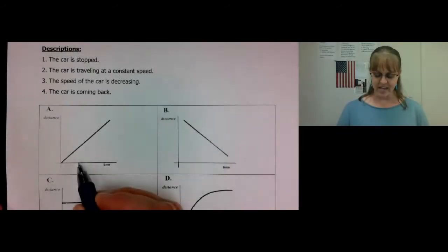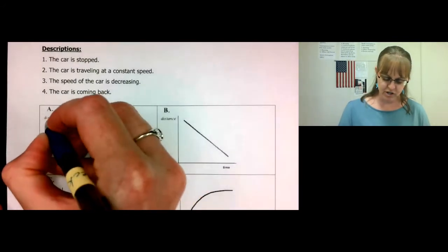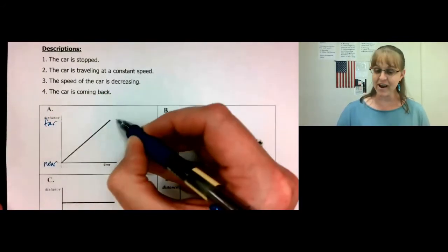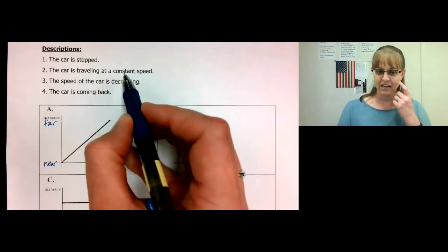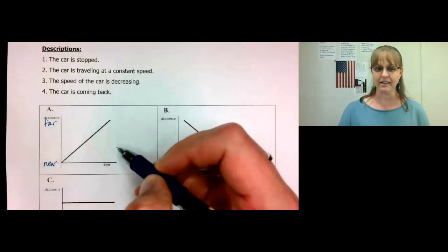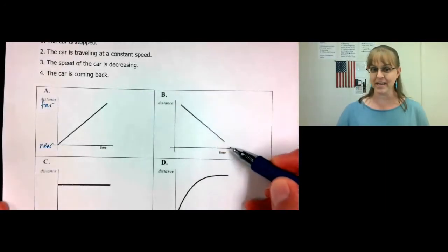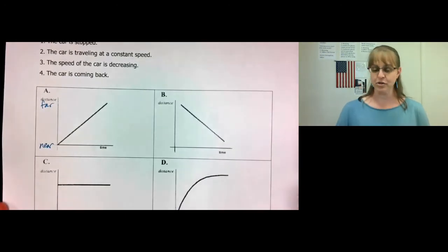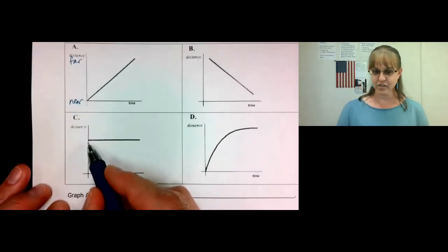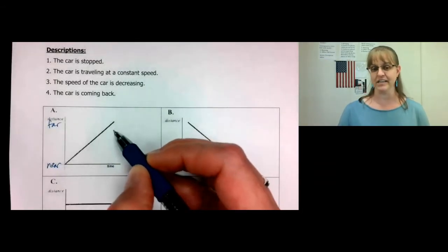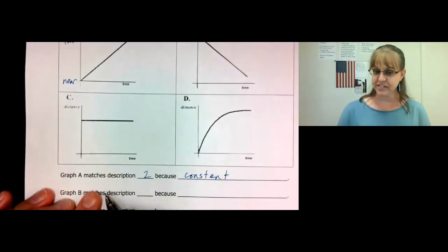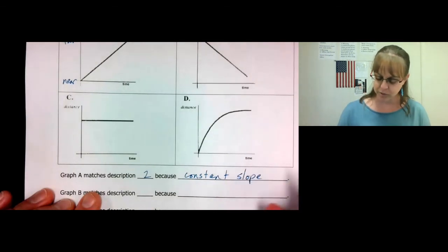In graph A, the car is moving from near to far at a steady rate — at a steady speed. So the car is traveling at a constant speed because of the straight line. Technically, graph B is also going a steady speed coming back to you, and graph C is going a steady speed of zero. But in graph A, the car is not stopped, it is not decreasing, and it is not coming back. So graph A matches description two because it has a constant slope, and a constant slope equals a constant speed.